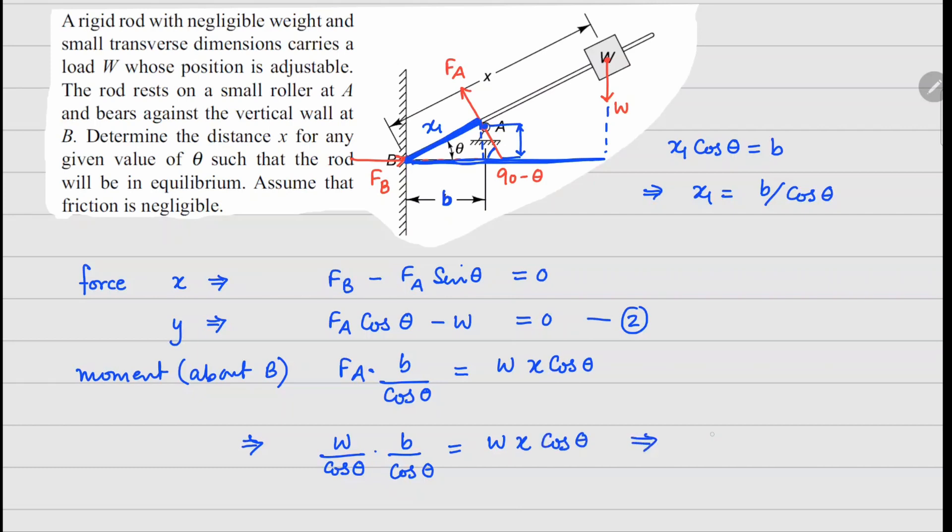So if you solve for x from this, we can see it's going to be B divided by cos theta.